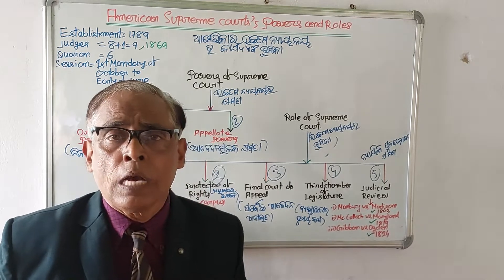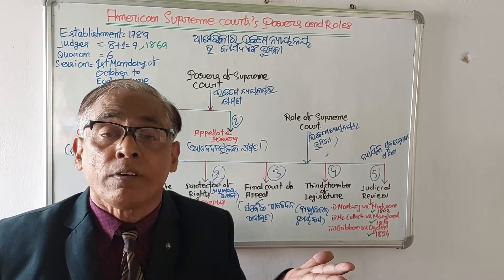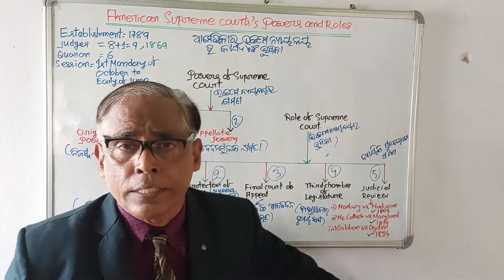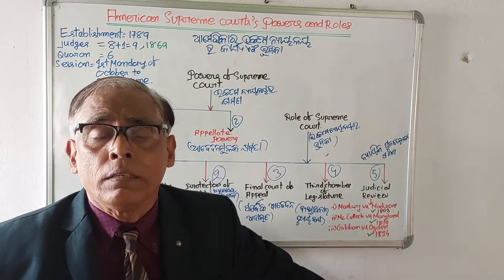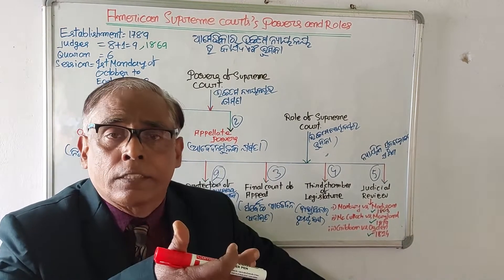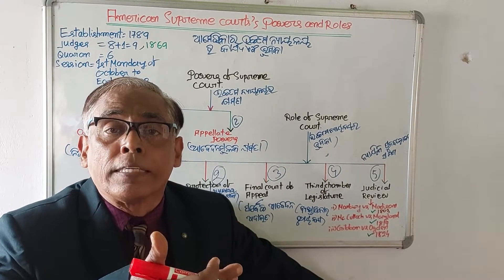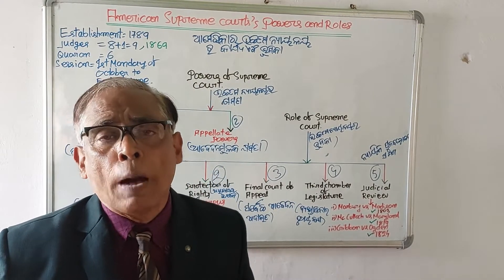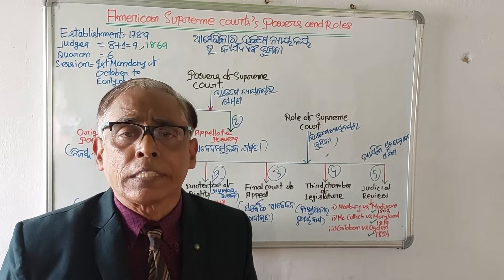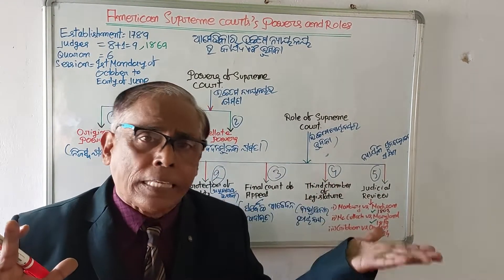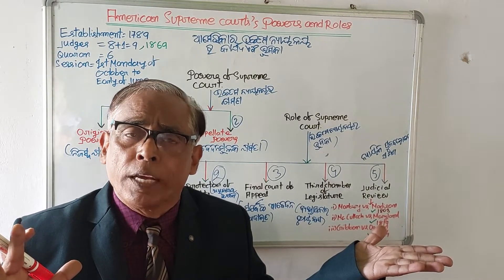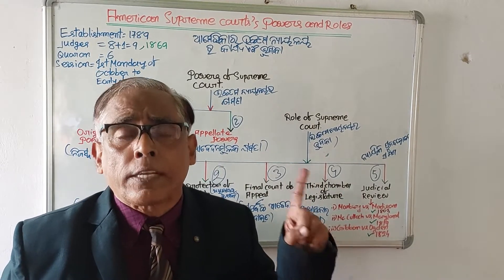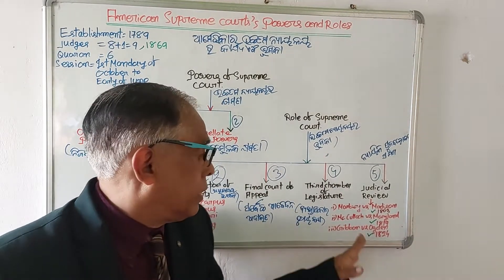In McCulloch v. Maryland (1819), the Maryland legislature decided to impose a tax on the currency of the United States of America. When the case was referred to the Supreme Court, Chief Justice John Marshall pointed out that the state legislature had no power to impose tax on the currency of the United States. The American Supreme Court declared the act of the Maryland state legislature as invalid.